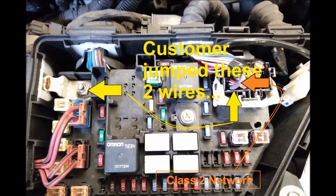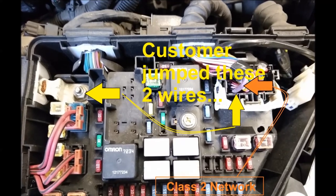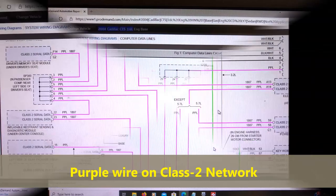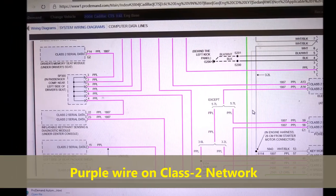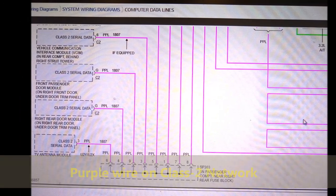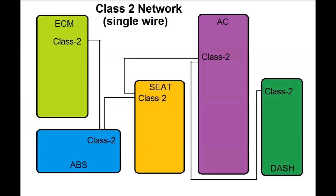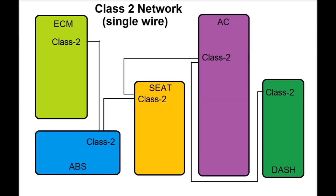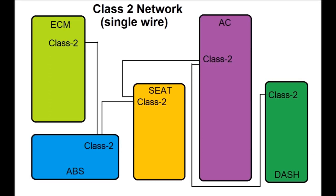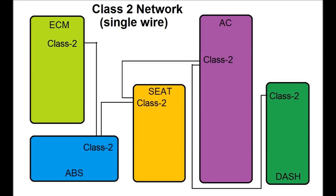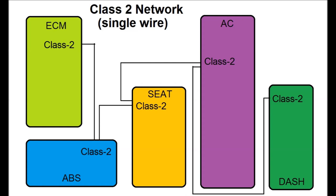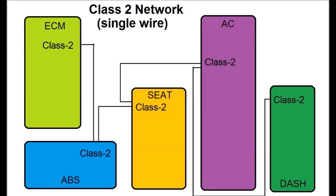Class 2 is a single wire, and the purpose of this video is to show you how Class 2 works and operates. As you can see on screen, the purple wire is the network, and it goes from module to module. We have our own diagram that we made for the Class 2 network — it's just a single wire that goes from one module to the other. Oftentimes it goes into a main bridge connector that you can actually unplug and test, to see which module is having an issue.